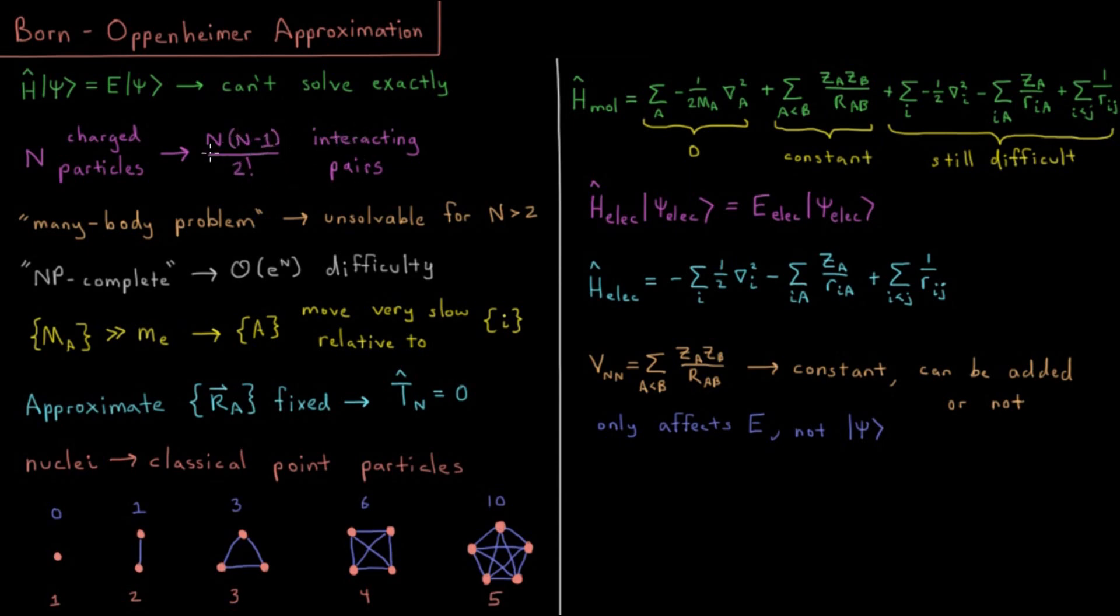So there's a quadratic number of those, n squared over 2 minus n over 2.